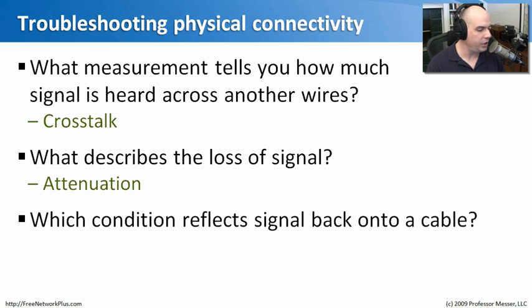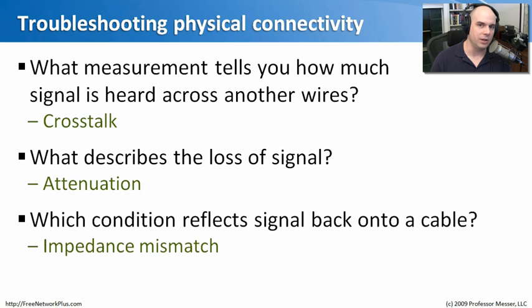The last question is, which condition reflects the signal back onto the cable? Which means that we're trying to have that flow go all the way down the cable, and it's reflected back to us because there is some impedance mismatch that's occurring as it goes along its way and goes through different links of that cable.